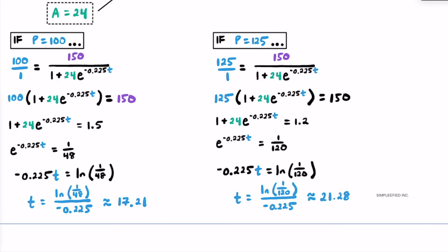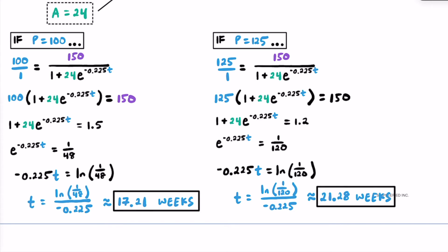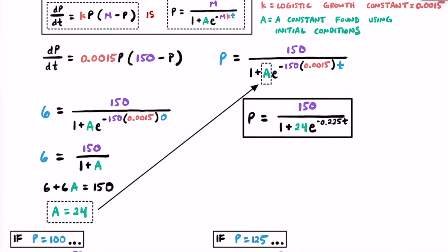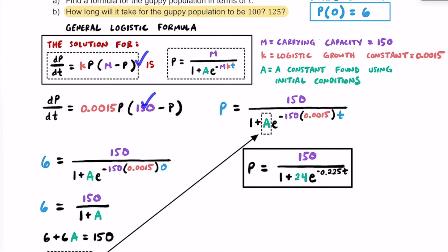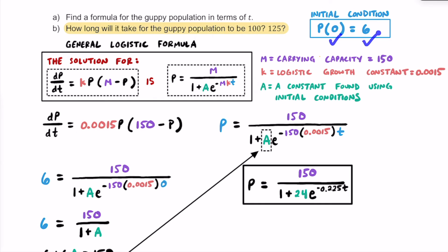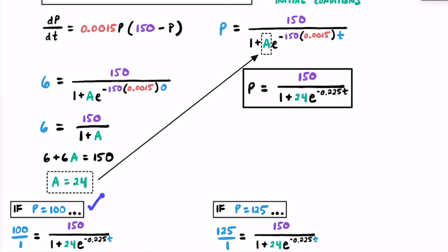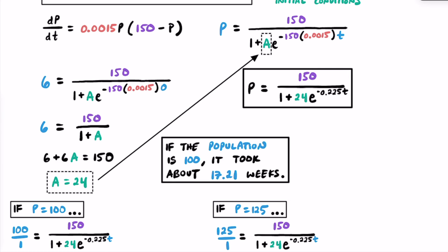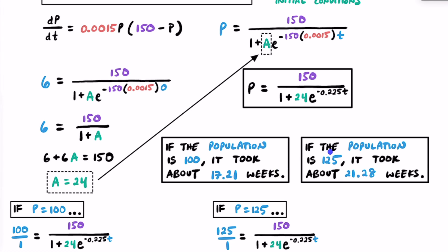It takes a little bit longer to reach the higher population, which makes sense. Putting this all together: we used our general logistic formula to identify m and k, then used the initial condition of 6 guppies at the start to solve for A = 24. That gave us the complete formula for the guppy population in terms of t. Then for Part B, we plugged in p = 100 and p = 125 and solved for t, finding it takes about 17.21 weeks to reach 100 guppies and about 21.28 weeks to reach 125. That wraps up this video on logistic growth.